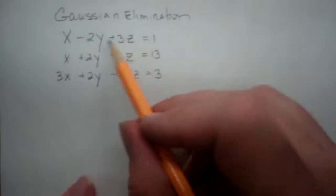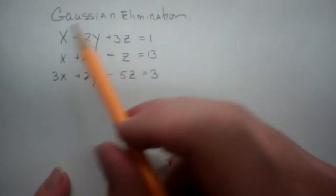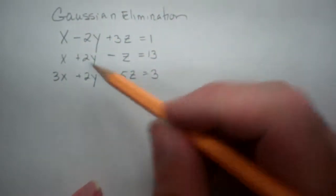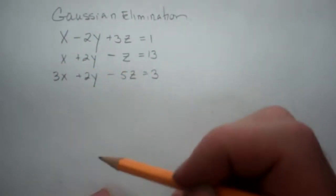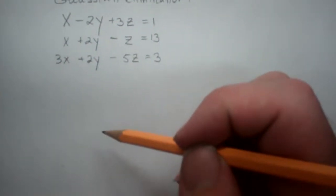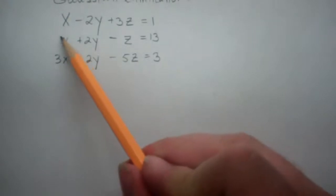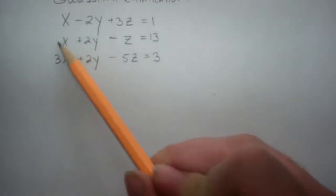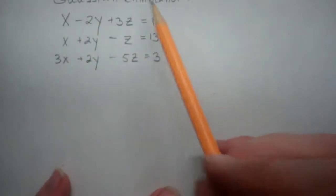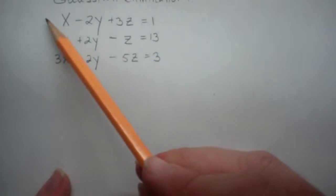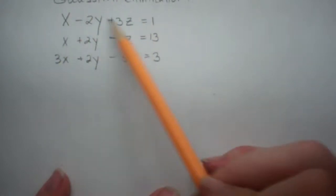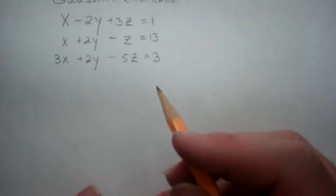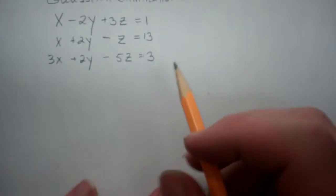So let's go ahead and do this. There are many ways to work through this, but here is one good way. First, I'm going to try to get rid of this x. The way I'm going to do that is by multiplying the entire top equation by negative 1 and then adding it to the second equation.